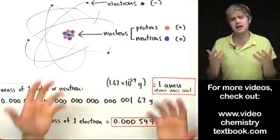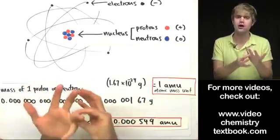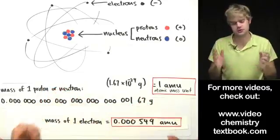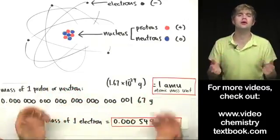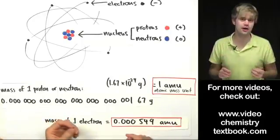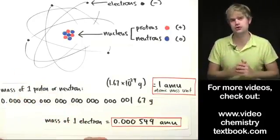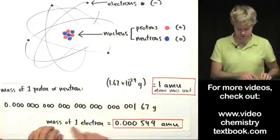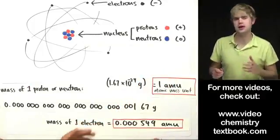It's like when you get on a scale to weigh yourself. You don't worry about the ring you're wearing or whether you're wearing a necklace or something, because those things are just so tiny, they weigh so little compared to how much you weigh that it doesn't really influence your weight. So protons and neutrons, 1 AMU, and electrons, a tiny fraction of that.